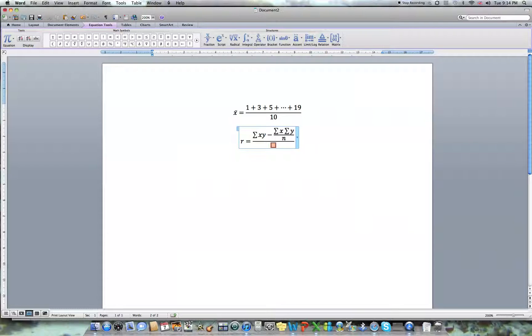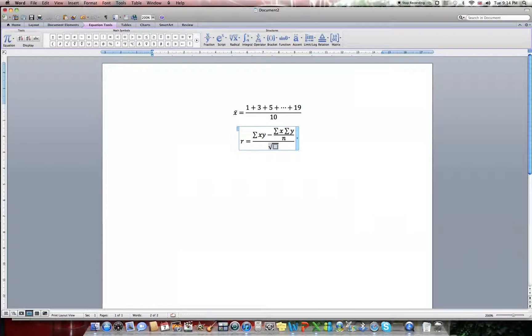In the denominator of the correlation coefficient formula, I'll set up a square root. And so inside my first square root, I'll have sigma. I need to create an exponent. So while this is highlighted, the place where I want the exponent or the power to go, I'll say script, and I'll select this first one. There we go. And I want it to be x squared. And from that, I'm going to subtract a fraction, which is sigma of x.